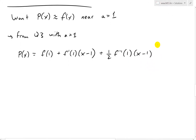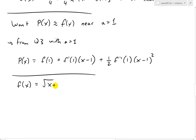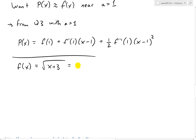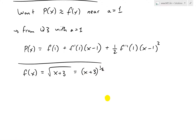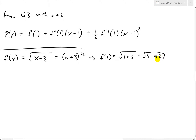Now we just need to find the constant values — the function and derivative values. We have f(x) = √(x+3), which is the same as (x+3)^(1/2). Plugging in x = 1: f(1) = √(1+3) = √4 = 2. So f(1) = 2.